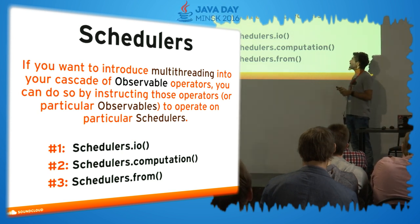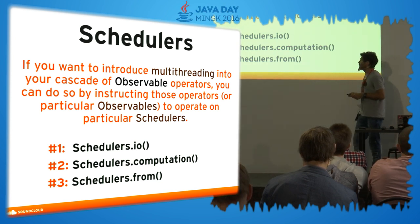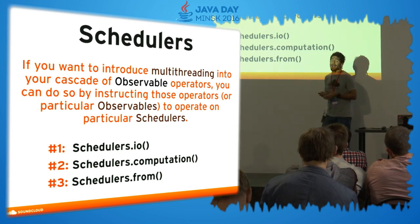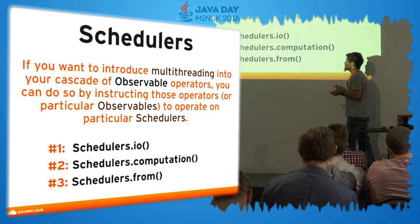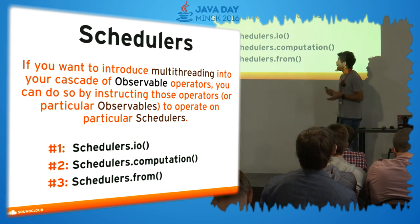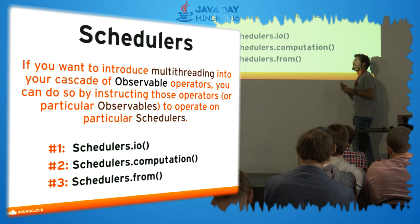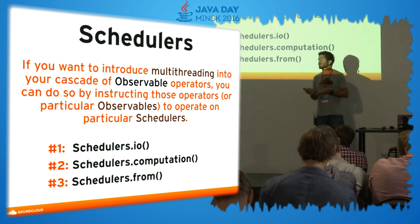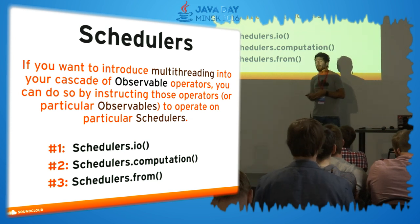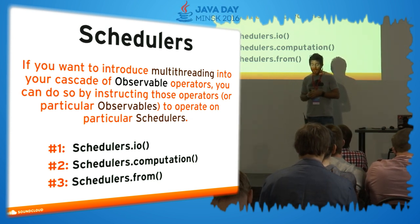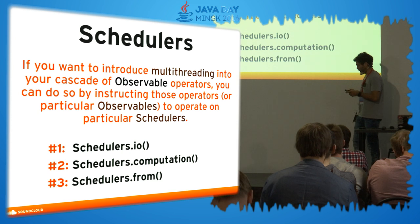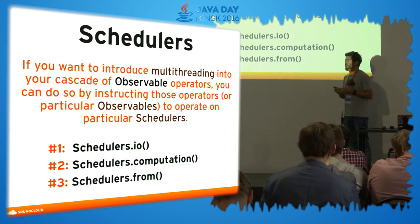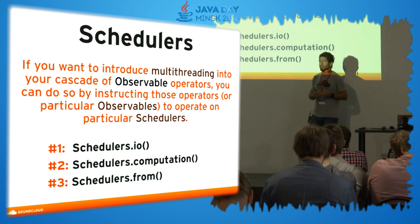RxJava comes with certain schedulers. The first one is Schedulers.io(), good for performing input-output operations. We have another one for computation — for doing extensively hard computation things. If we need more control over our threads, we can create our own schedulers. At SoundCloud we have our own pool of threads so we can control the amount of threads our app manages. Unless you have complex multi-threading logic, I don't think custom schedulers are very necessary.